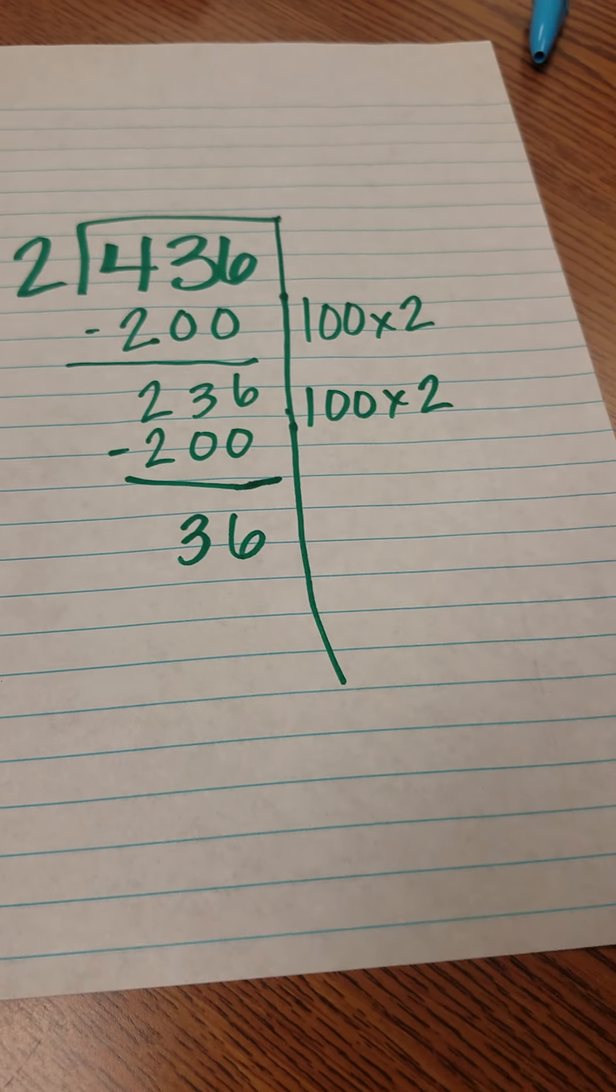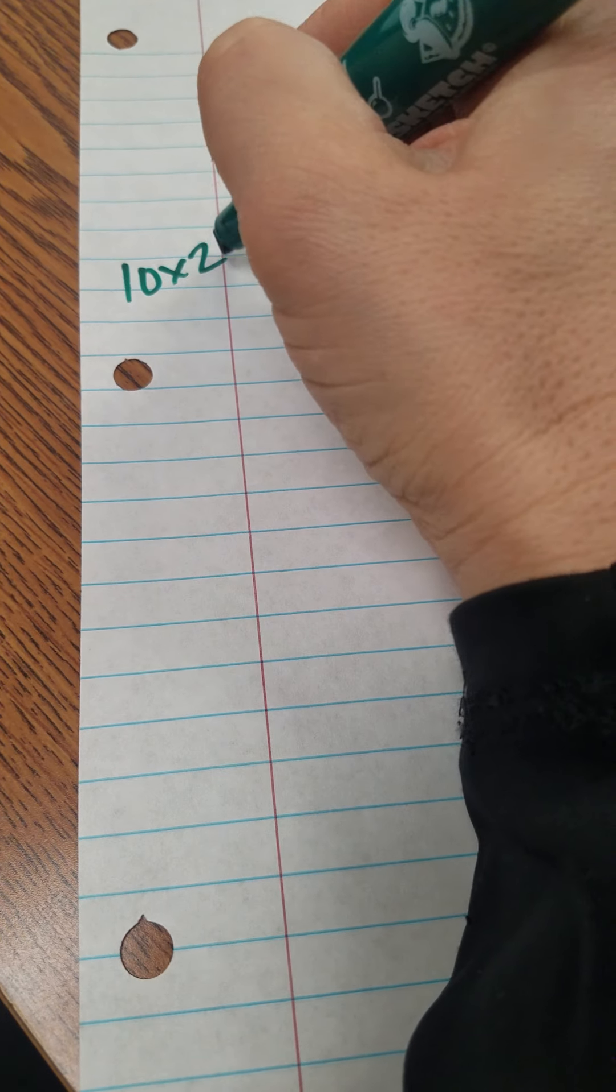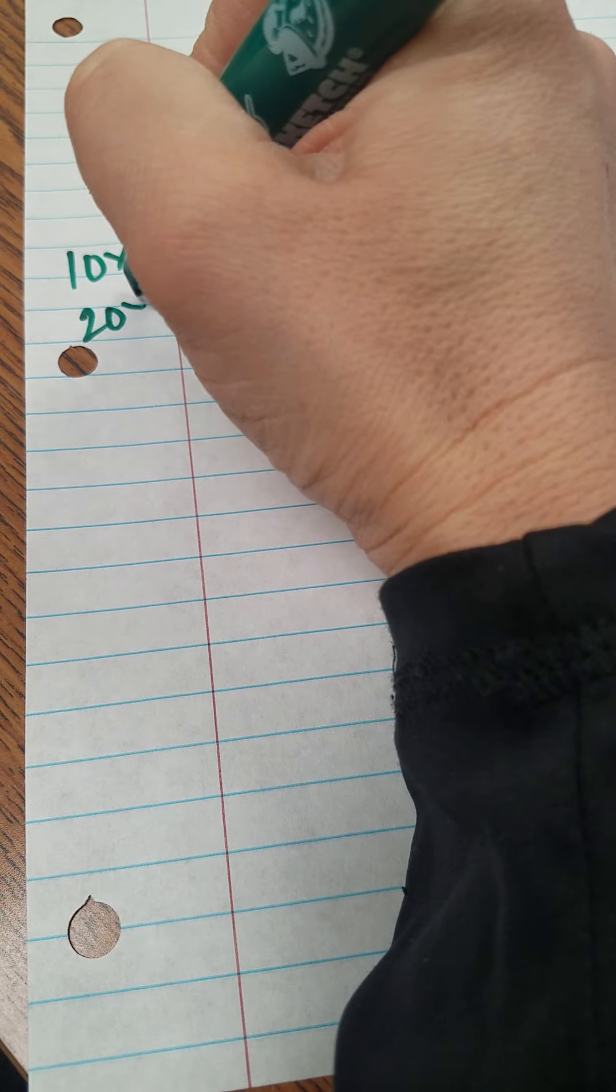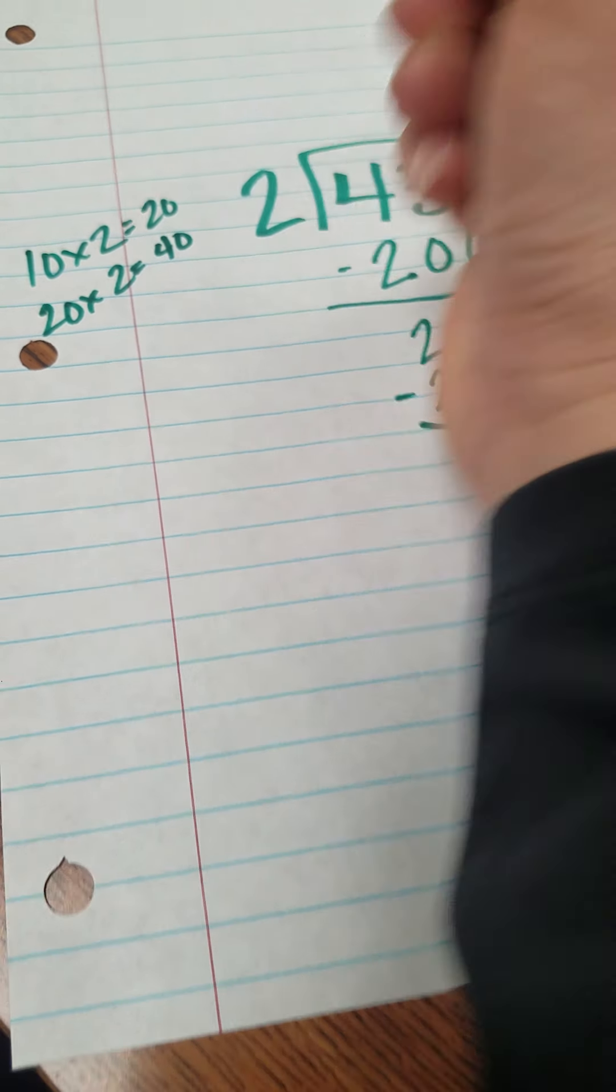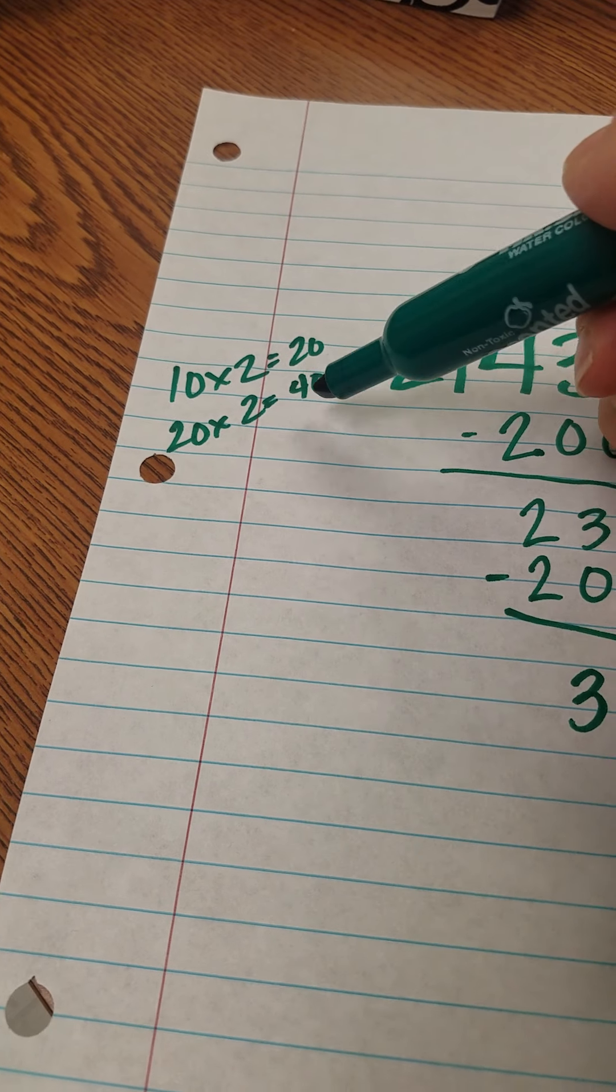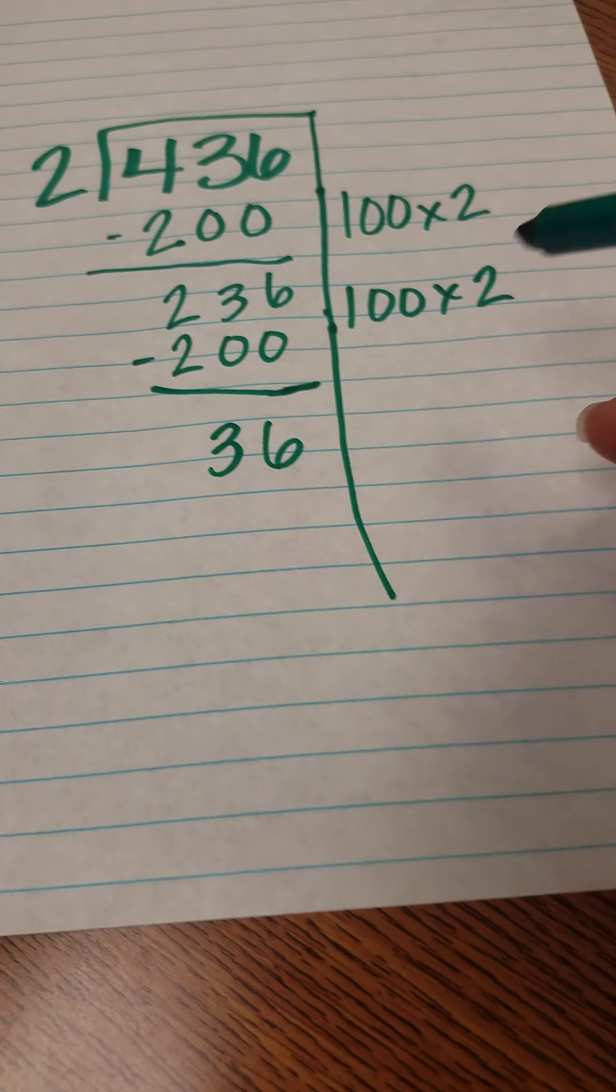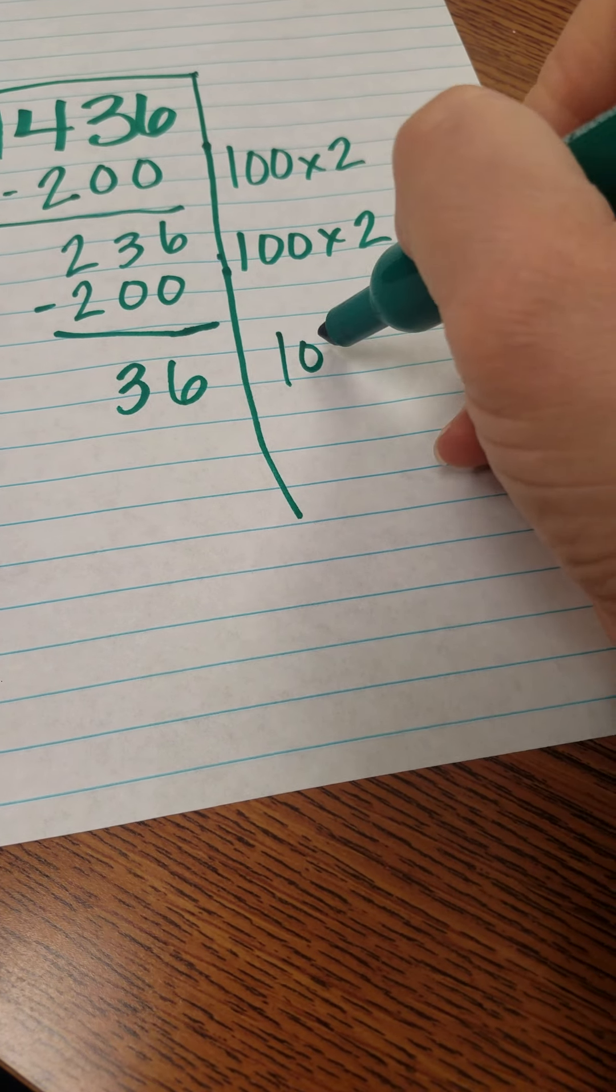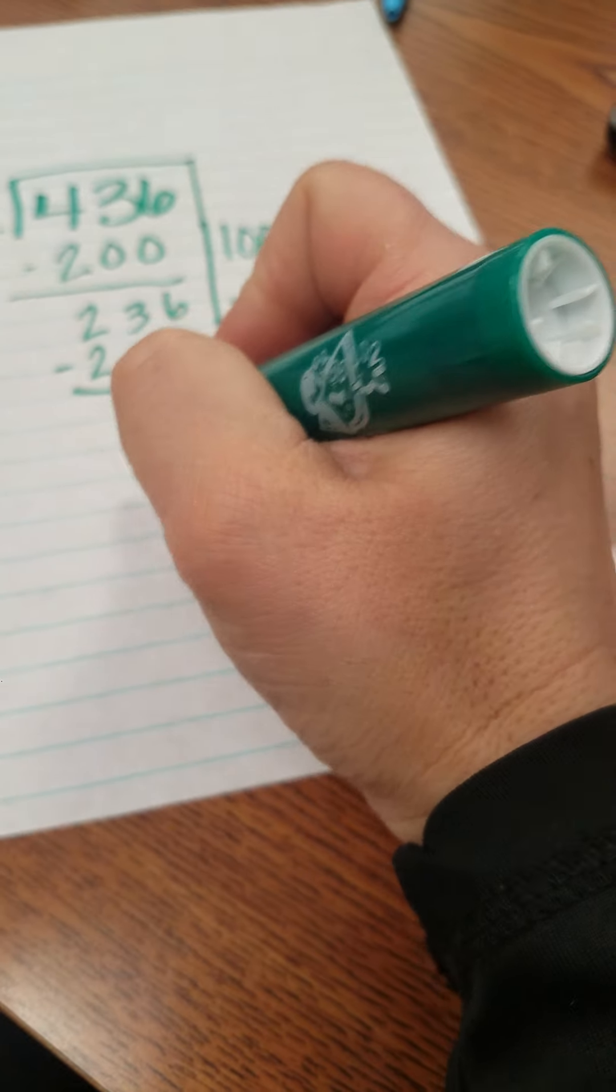You could do a little math problem over here where you do 10 times 2 and then 20 times 2 just so you have it written down for yourself. But if you notice I have to, between 20 and 40 I only have 36, so I'm going to do 10 times 2. So 10 times 2 is 20.